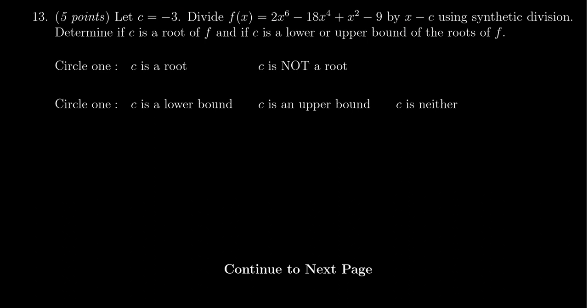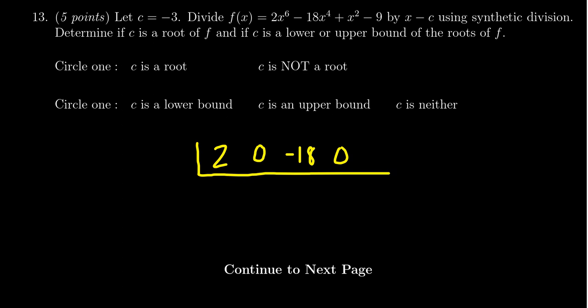Let's first do the synthetic division. Write down the coefficients of f in descending order. Make sure you don't skip over any places. So we have 2x^6, then 0x^5 - it's important to remember that - then -18x^4, 0x^3, 1x^2, 0x, and then -9.